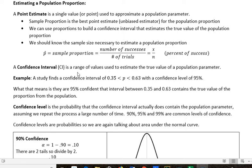For instance, a study finds a confidence interval of 0.35 to 0.63. The probability for the population is between 35% and 65% with a confidence level of 95%. What that means is they're 95% confident that the interval between 0.35 and 0.63 contains the true value of the proportion for the population.